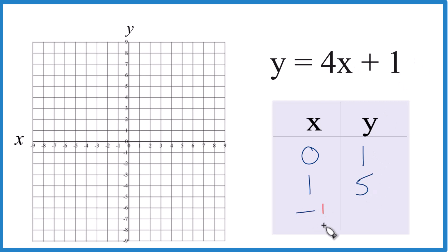And then negative 1. 4 times negative 1, that's negative 4, plus 1, that's just negative 3. So now we can graph these points. We'll get our line for y equals 4x plus 1.